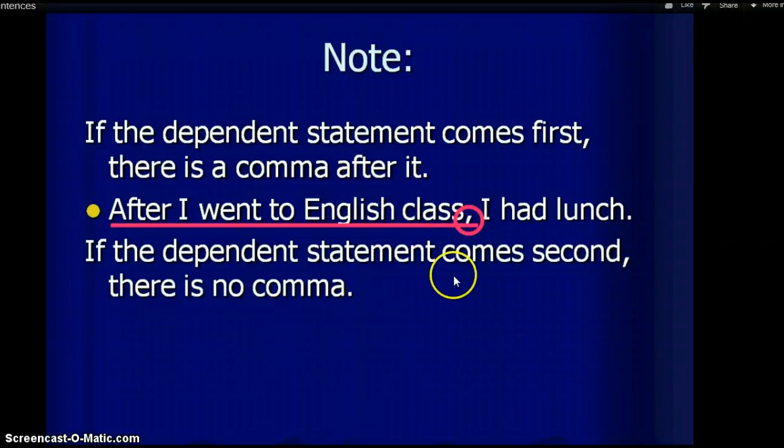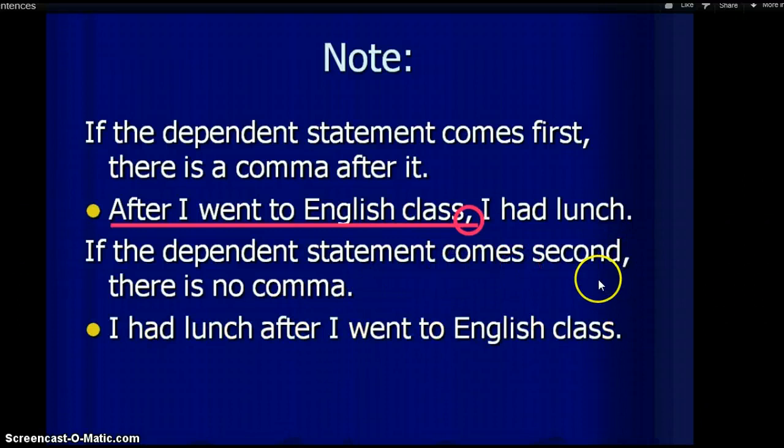Now, if the dependent clause is last in the sentence or second, then there won't be a comma. Where is your clue word here? There's the dependent clause. And notice that there is no comma before a dependent clause. Now, comma rules come into play here. You have to know when to use the comma and when not to use the comma. So make a note. If the dependent clause comes first, it's comma. Dependent clause comes second, no comma. Okay, that's the end of this lesson.